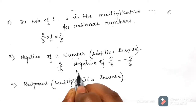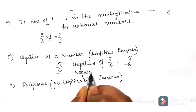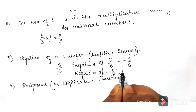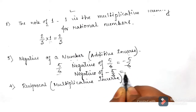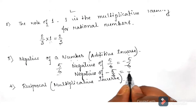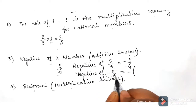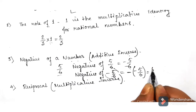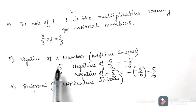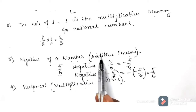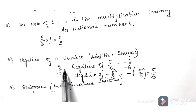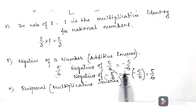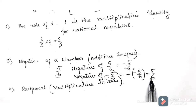If the question asks for the negative of minus 5 by 6, we apply the negative sign to the number: negative of a negative rational number gives a positive. Minus times minus equals plus. So when finding the additive inverse of any rational number, you change the sign — plus becomes minus and minus becomes plus.